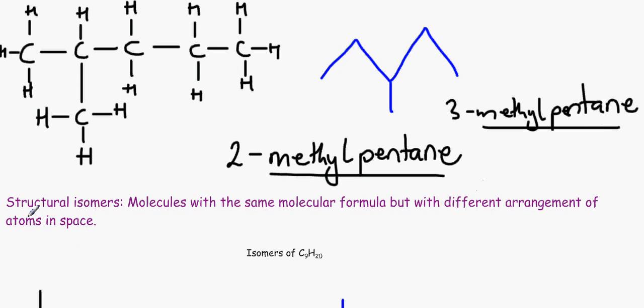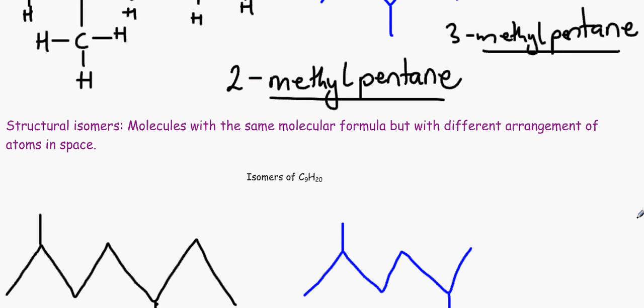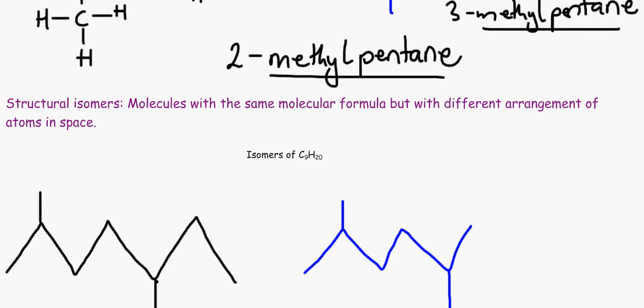So what we both need to all remember, OCR and AQA, is the definition of a structural isomer. And the structural isomers are molecules with the same molecular formula, but with different spatial arrangement. It might sound a bit of gobbledygook, to be honest.